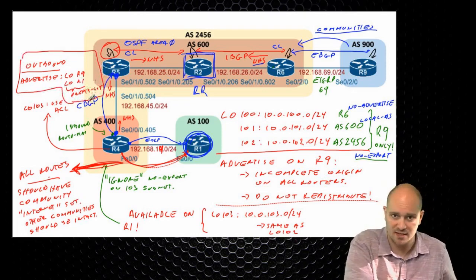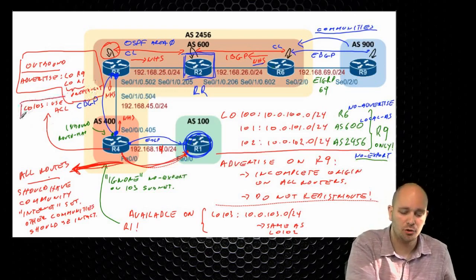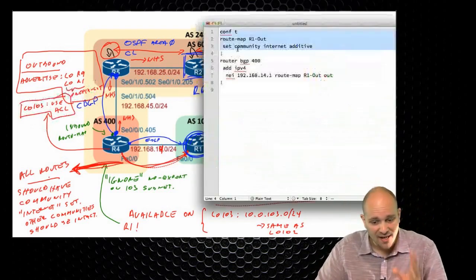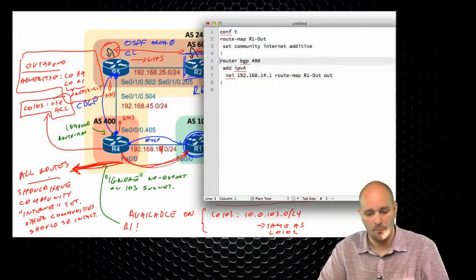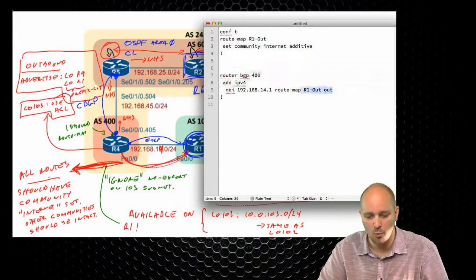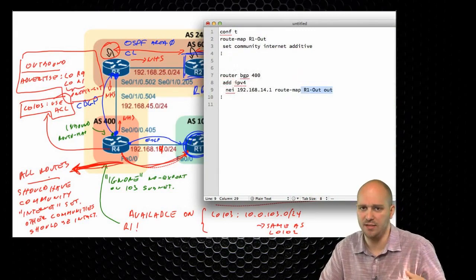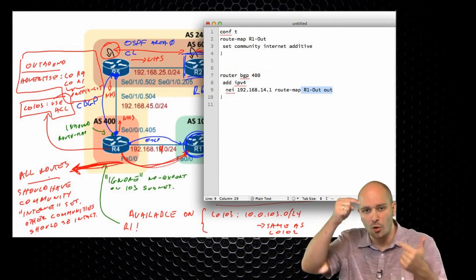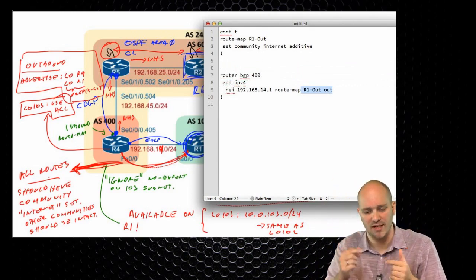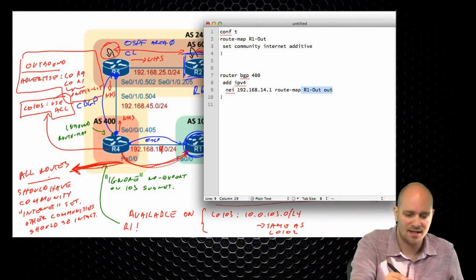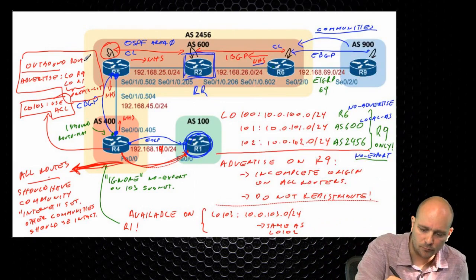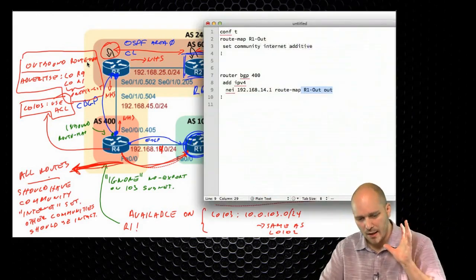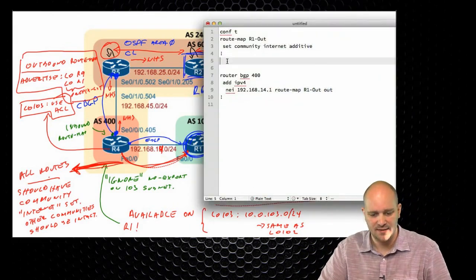You can use multiple prefix lists or one prefix list, it doesn't matter. But for loopback 103, you need to use the access list. Now, we already have a filter in place. I cannot have more than one route map here, but I can add distribute lists, prefix lists, and other stuff — but then I have to worry about the order of preference and processing. So I'm going to use the route map with the outbound route map restriction. Let's create the prefix list we need.